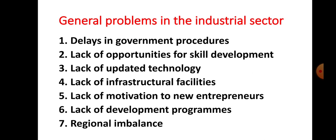The next industrial problem is lack of updated technology. Many industrial units in Maharashtra are using traditional methods in the production process rather than advanced, modern, and sophisticated technology. This affects the productivity of industry and ultimately the GDP (Gross Domestic Product) of the state.